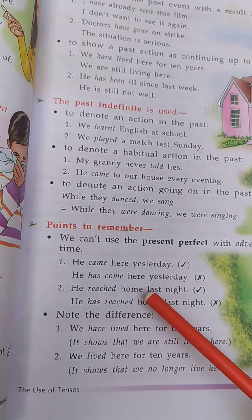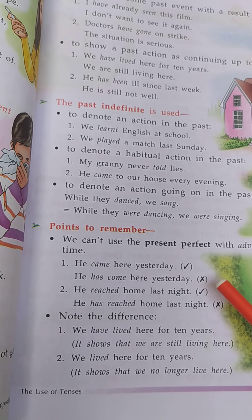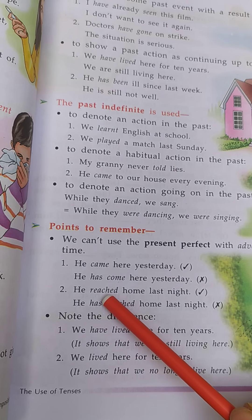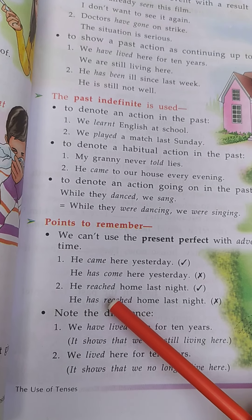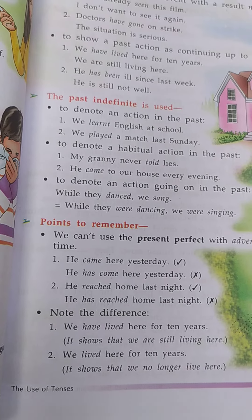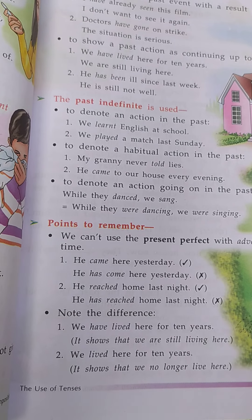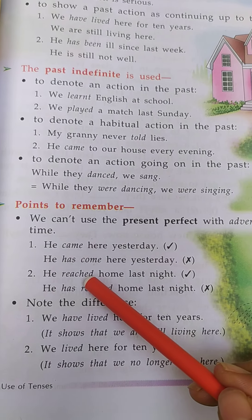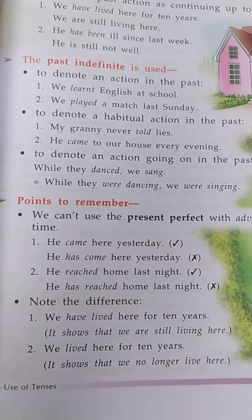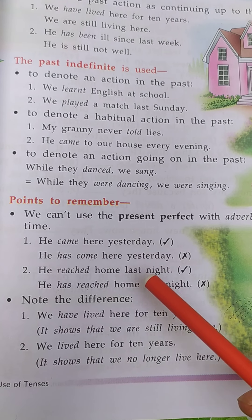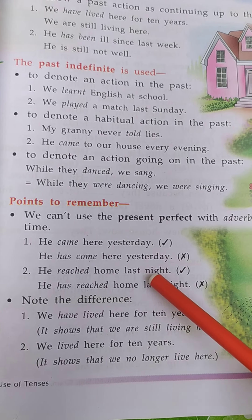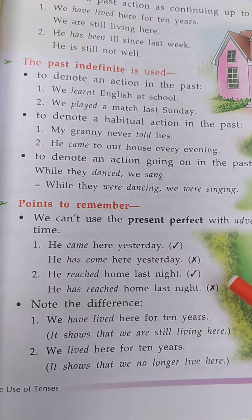Number two: he reached home last night. यह sentence correct है, क्योंकि इस sentence में जो verb है — reached — वो V2 form है। इस sentence यह बोल रहे हैं कि उन्होंने last night घर पहुंचे थे। Reached, V2 form of the verb — उसके साथ जो adverb है, last night, यूज़ हुआ है। Means past indefinite के साथ last night यह adverb यूज़ हुआ है। इसलिए sentence correct है।